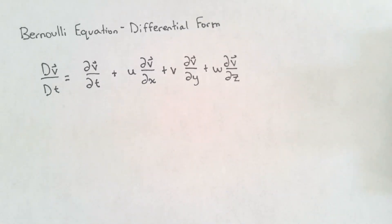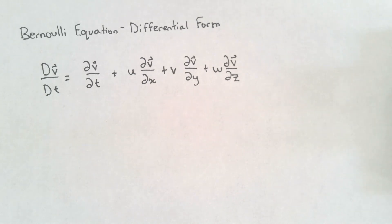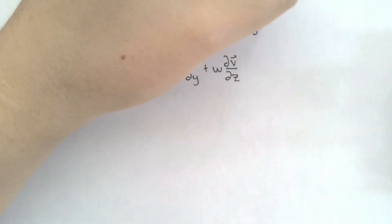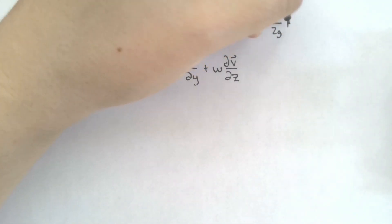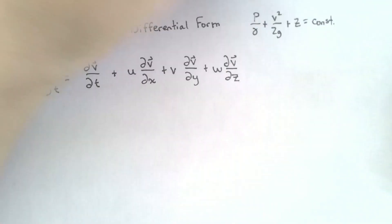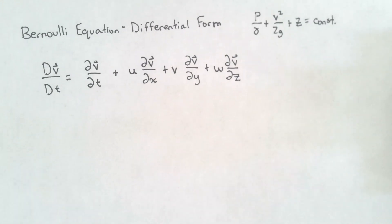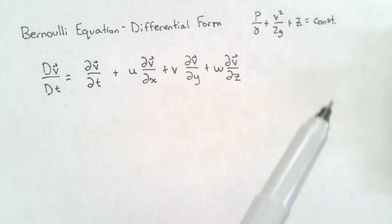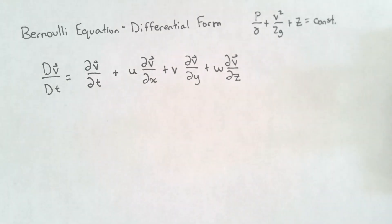Back when we initially derived the Bernoulli equation, we started off with Euler's integral formulation of his equations, and we integrated it over a streamline and landed at the classical Bernoulli equation that we all know and love — the pressure term, the velocity term, and the elevation term at any point in the streamline should be equal to a constant. We also derived Euler's equations in differential formulation. The question is: can we go from Euler's differential formulation and still land at the Bernoulli equation? The answer should be yes, but getting there may be a little bit tricky.